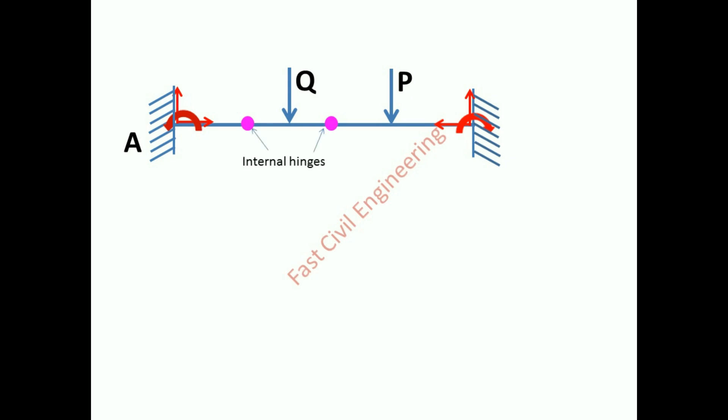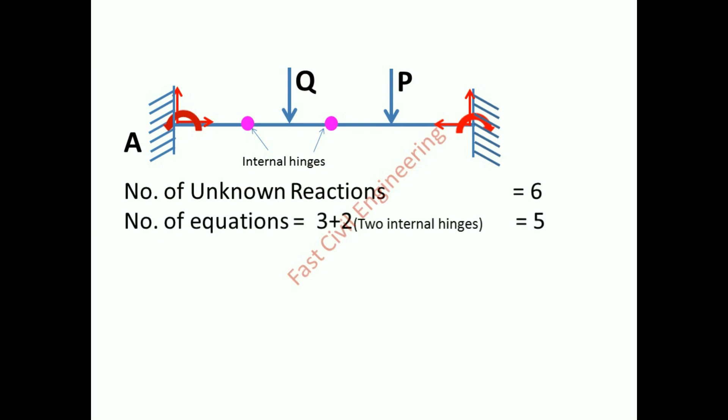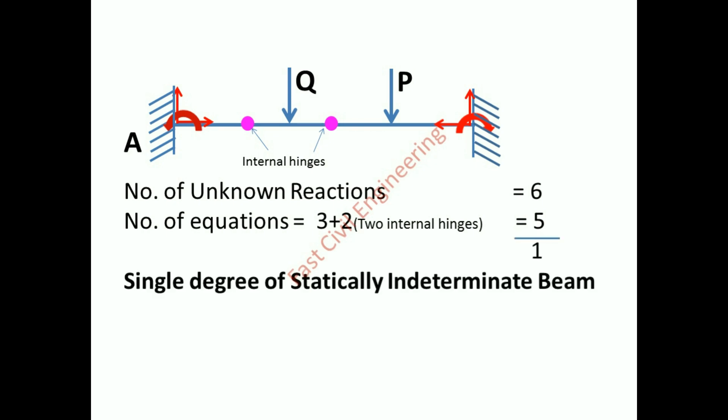Consider this structure. Number of unknown reactions equals six. Number of equations equals three plus two equals five. Six minus five equals one — single degree of statically indeterminate beam.